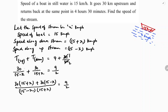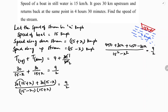Writing this equation in terms of time — time is distance upon speed, upstream plus downstream — the total is 9 by 2 hours, which is 4 hours 30 minutes. Simplifying the numerator: 30 times 15 is 450 plus 30x, plus 450 minus 30x. The denominator is a squared minus b squared form: 225 minus x squared. This equals 9 by 2.